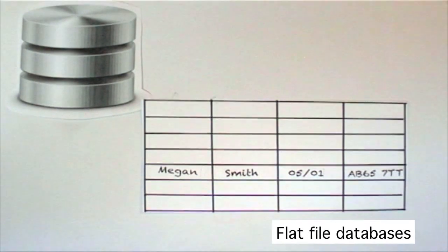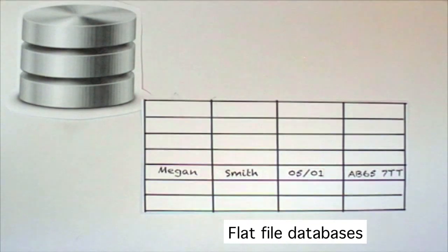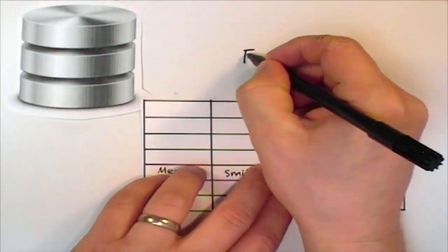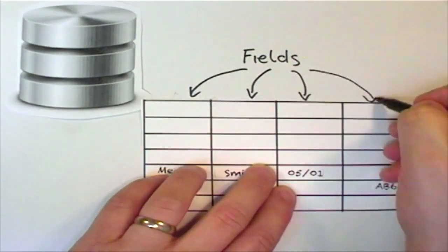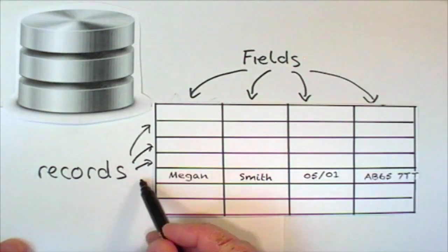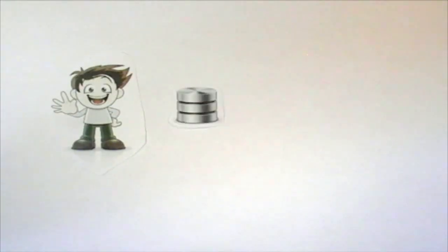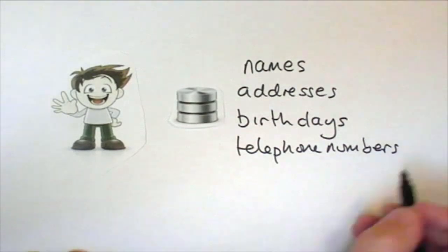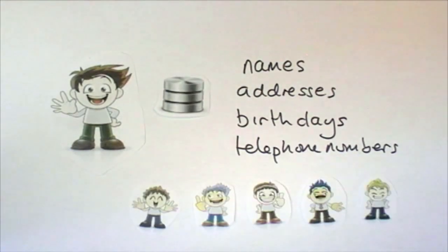Very simple databases are called flat file databases. They store data in columns of fields and rows of records. Let's think about a simple database that Bob uses to store his address book. This database contains the names, addresses, birthdays and telephone numbers of his friends and family.